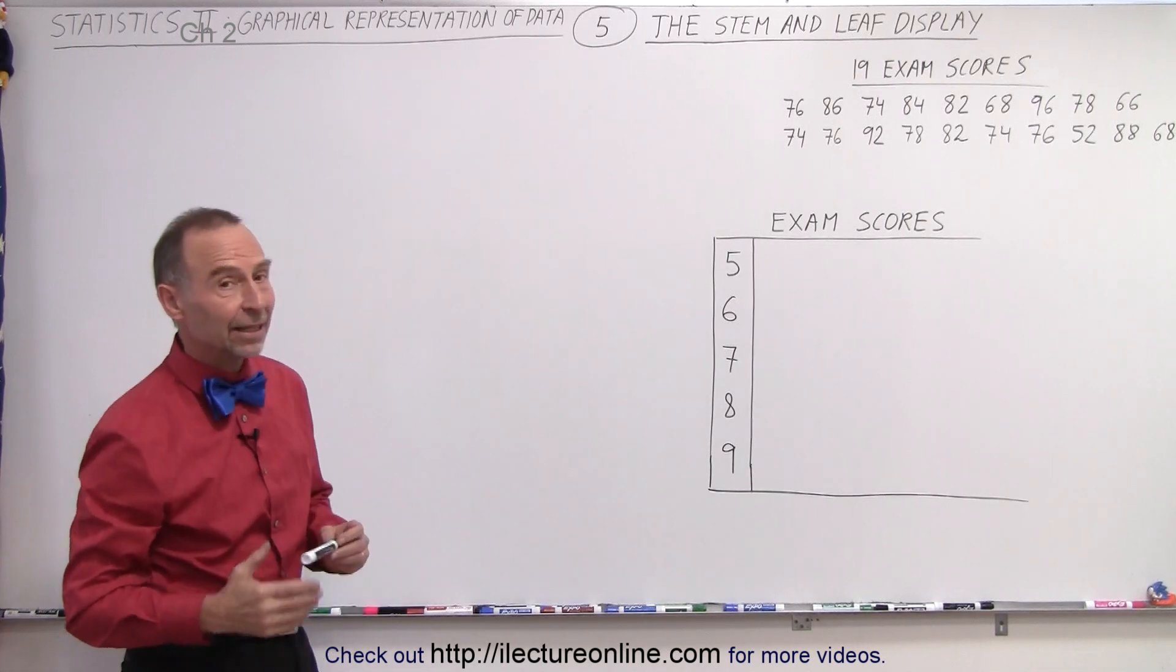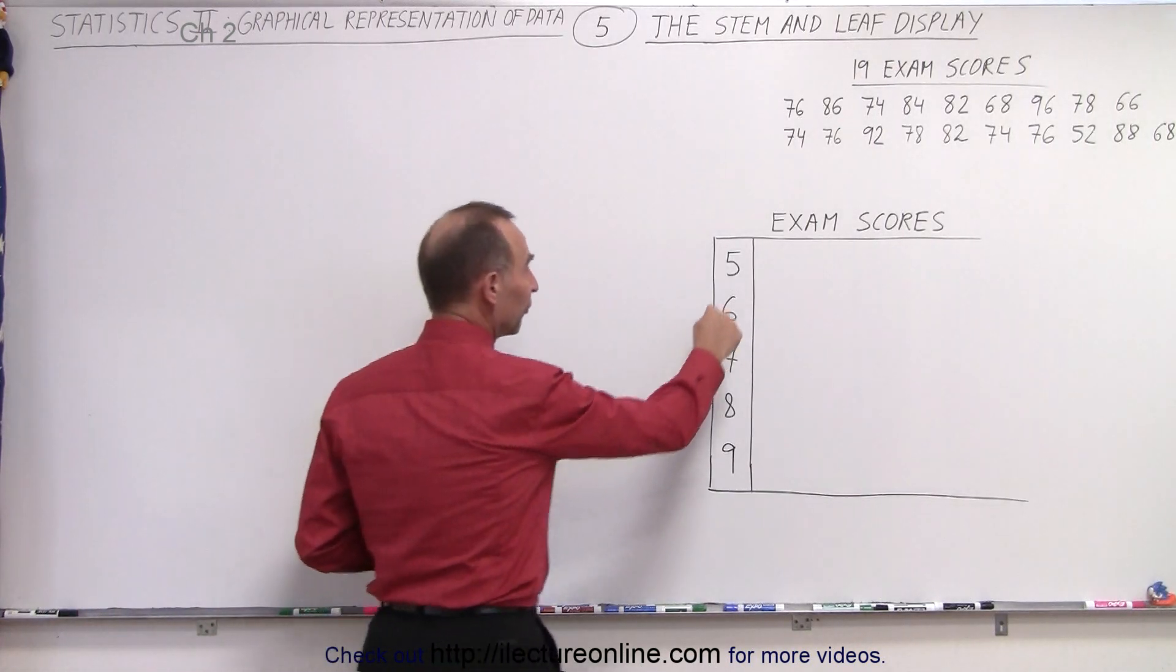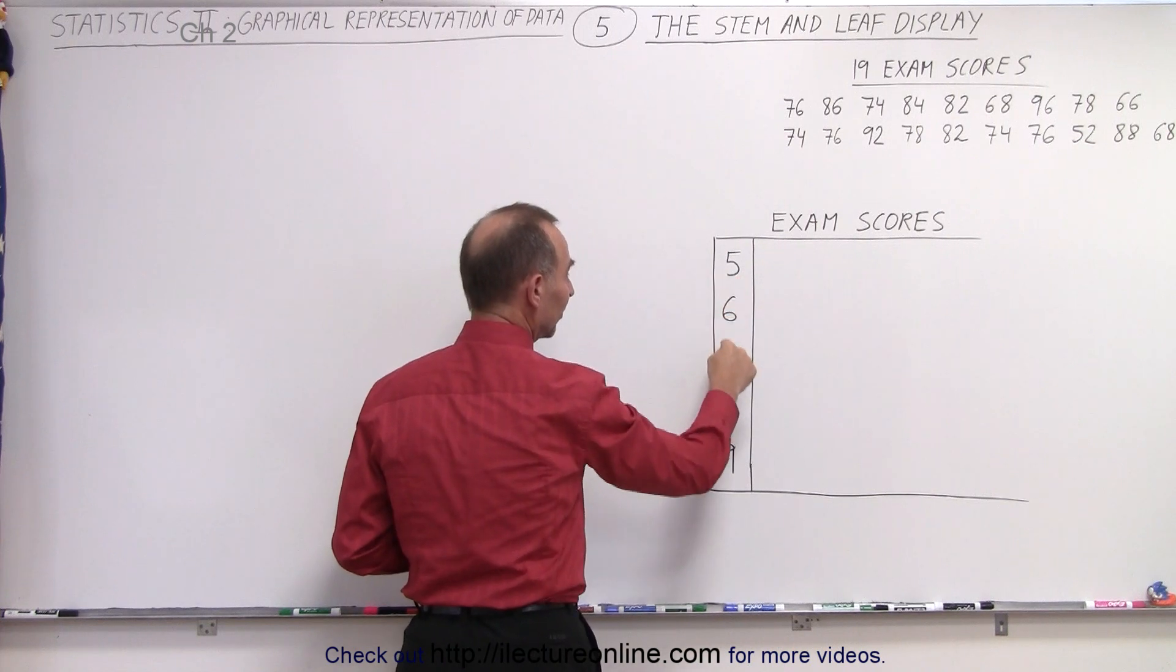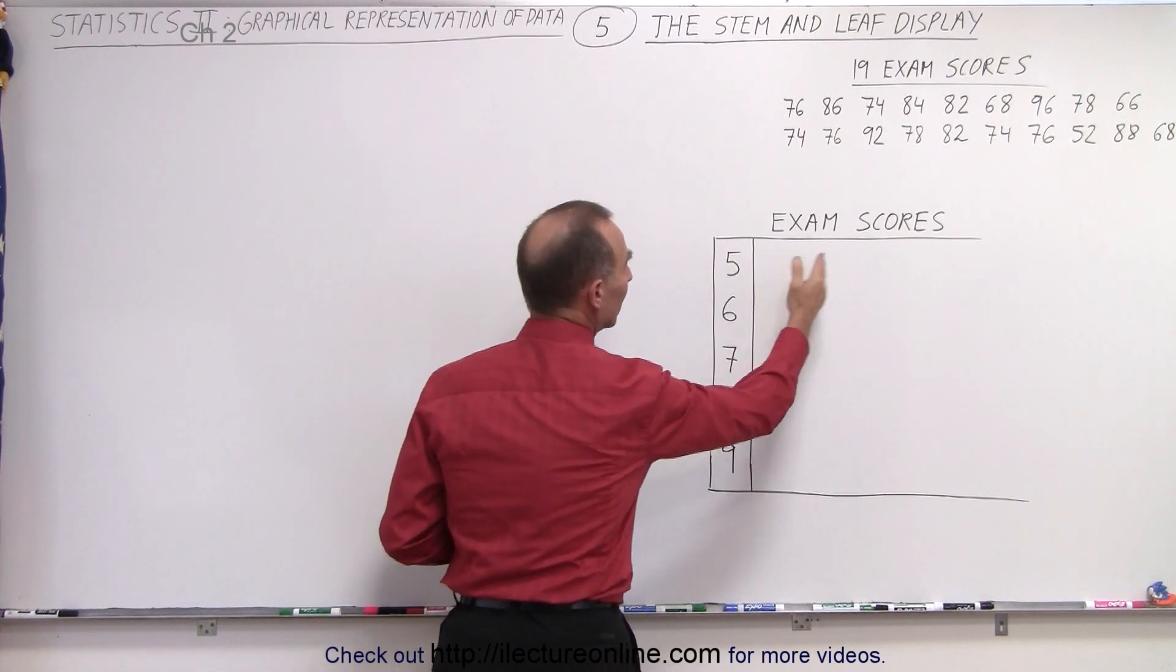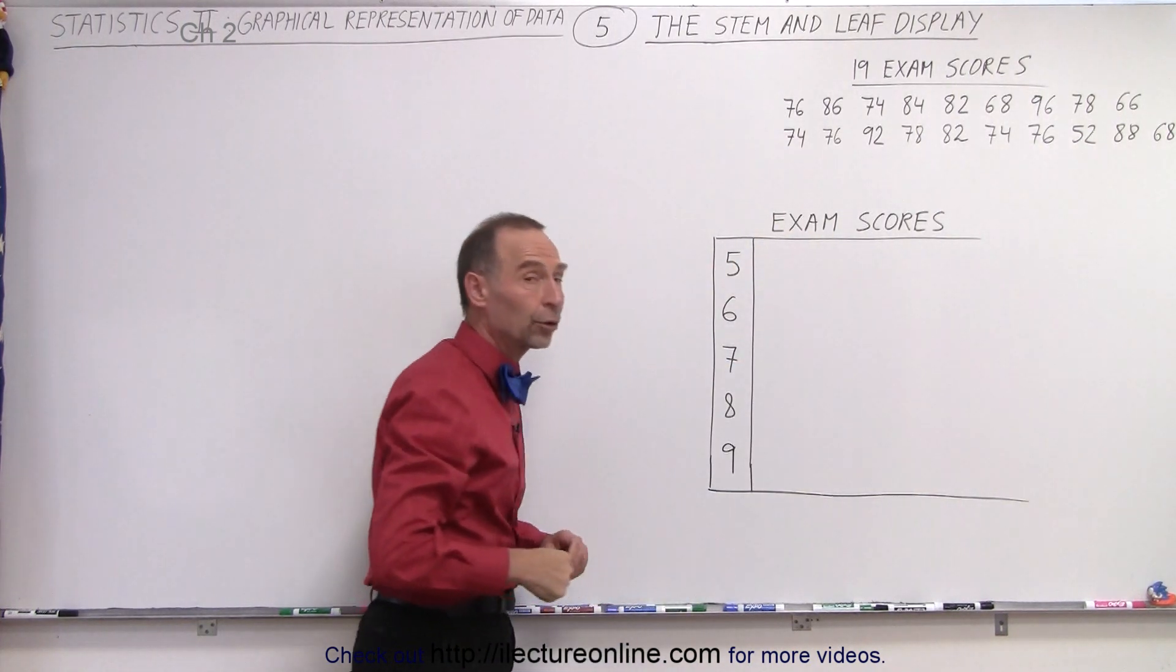We'll take the same 19 exam scores. Notice that the first digit of each score is over here: 50, 60, 70, 80, 90, and then here we put in the second digit as they occur.